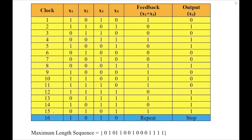You need to continue this operation up to clock number 15 and stop there, because since the PN sequence is a periodic sequence, when you come to clock number 16 — which is clock number L plus 1 — you will get the contents of the feedback shift register reset to the original value we started with. So when you come to clock number L plus 1, you need to stop the computation. At clock 16, the contents repeat. The PN sequence is found in the output column, read from top to bottom: 0, 1, 0, 1, 1, 0, 0, 1, 0, 0, 0, 1, 1, 1, 1.